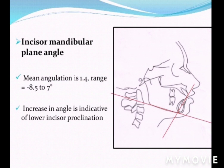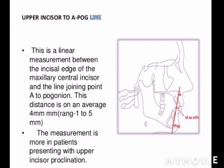Next is the incisor mandibular plane angle. The line passing through the long axis of the lower incisors is measured against the mandibular plane — the line joining gonion and menton. The mean angulation is 1.4 degrees, with a range of -8.5 to 7 degrees. An increase in this angle is indicative of lower incisor proclination, similar to the incisor-to-occlusal plane angle.